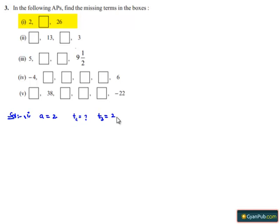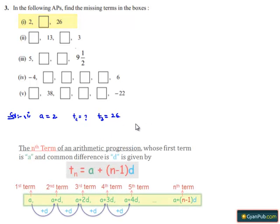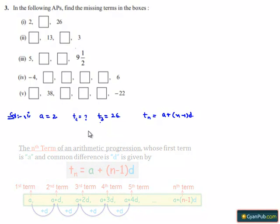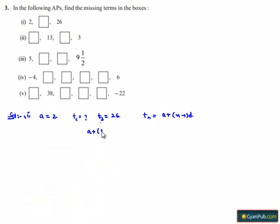We know that the nth term of AP is given by tn = a + (n-1)d. Therefore, t3 can be written as a + (3-1)d, which equals 26.